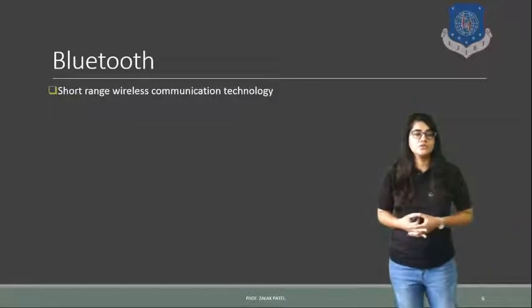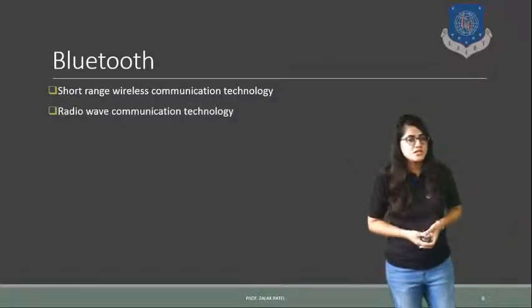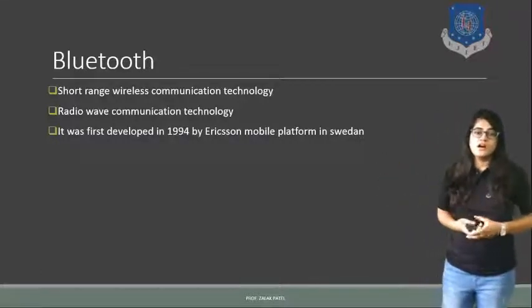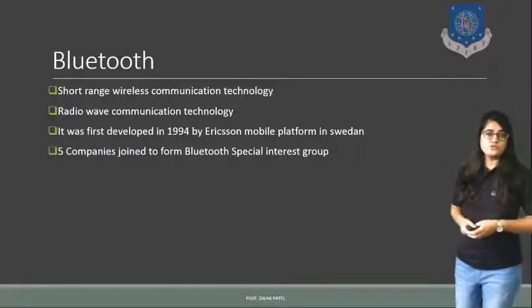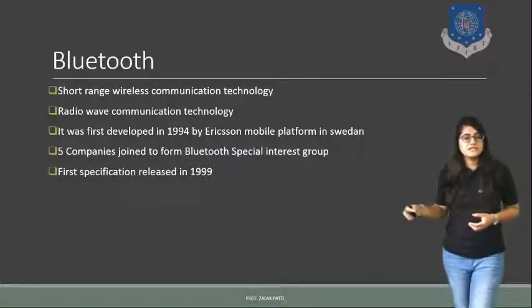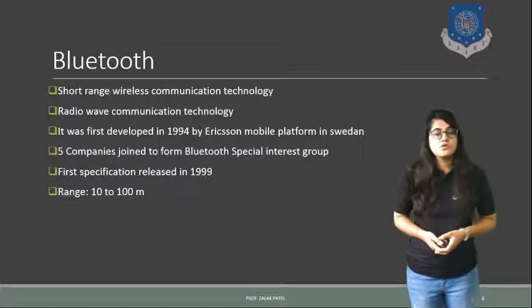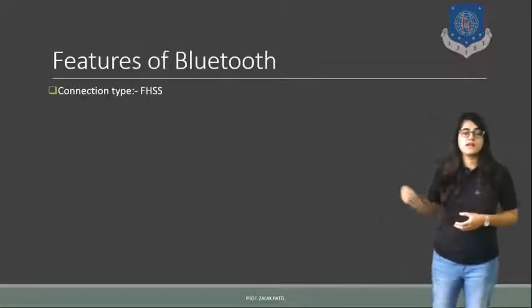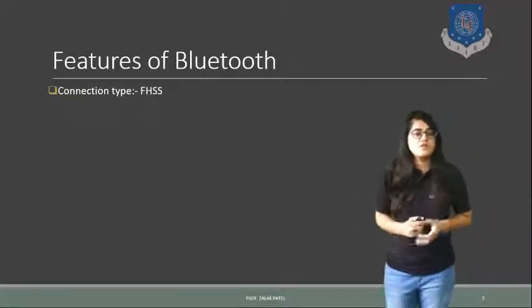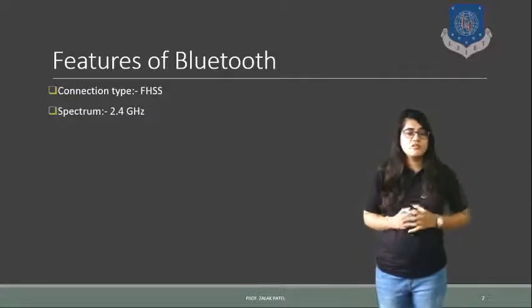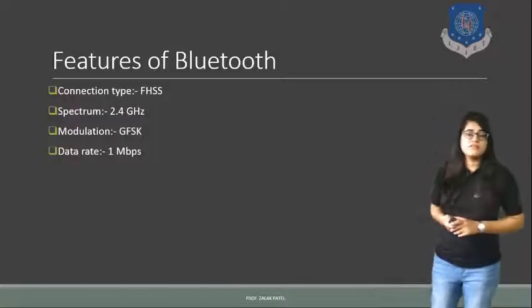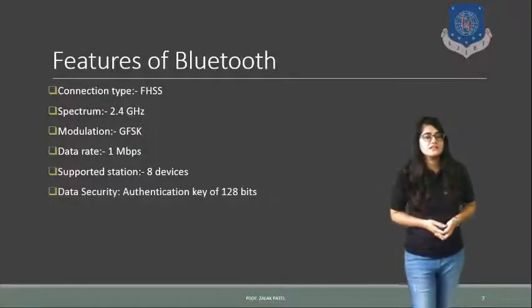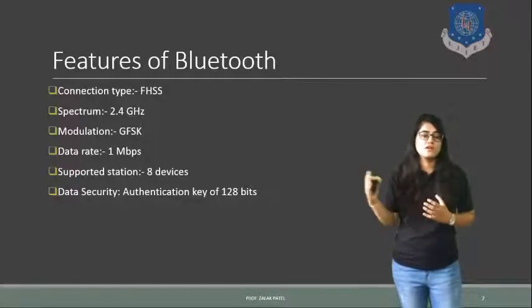The next topic is Bluetooth technology. It is a short-range wireless communication technology — one type of radio communication technology. It was first developed in 1994 by Ericsson platform, and power companies recently joined the Bluetooth Special Interest Group; the first specification was released in 1999. The range for Bluetooth is from 10 to 100 meters. Its connection type is FHSS — Frequency Hopping Spread Spectrum. The frequency of the spectrum is 2.4 GHz. The modulation technique used is GFSK modulation, with a data rate of up to 1 Mbps. It supports up to 8 devices, and data security or authentication can be provided using 128 bits.